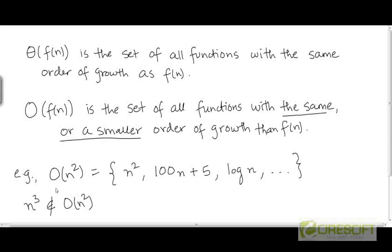For example, the set O taking f as n², the set O is going to have functions like n². Why is n² a member of this set? Because n² has the same order of growth as n². Why is 100n plus 5 a member of this set? Because 100n plus 5 has a smaller order of growth than f. We saw that in a prior video where we took a general linear function and proved that it is O. Log n likewise has a smaller order of growth than n², and so log n is present in this set.